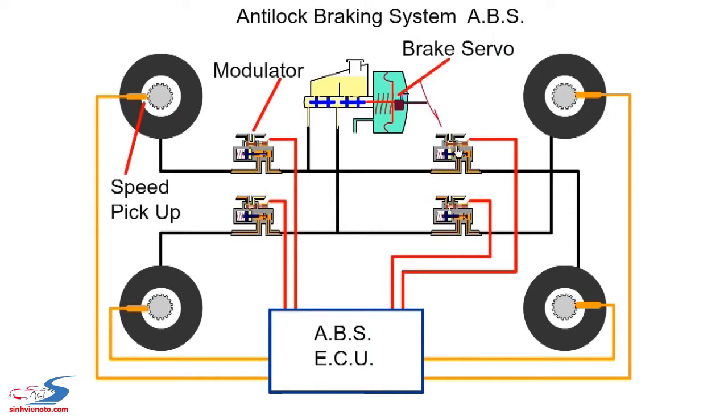Here we have a four-channel, four-sensor ABS system, where each wheel is controlled individually. Wheel speed is detected by a proximity sensor located beside a toothed wheel, which sends a signal to the ECU.